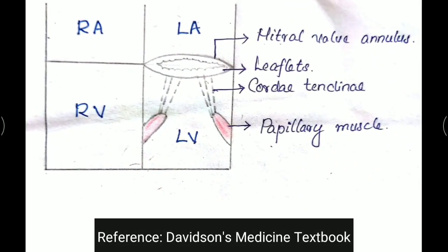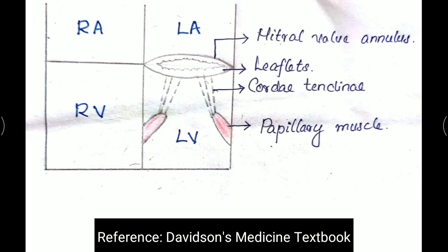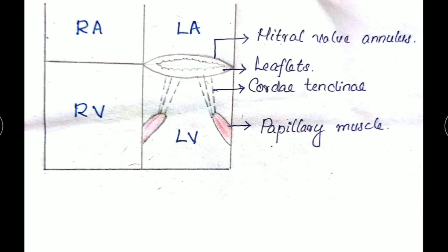As you know, the mitral valve is situated on the left side of the heart, which is a bicuspid valve supported by papillary muscles, chordae tendineae, and the mitral valve annulus. These three are very important in the pathogenesis of this condition.